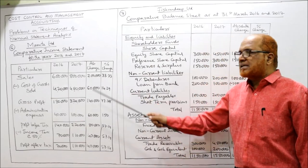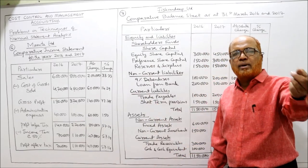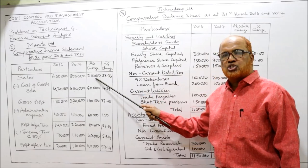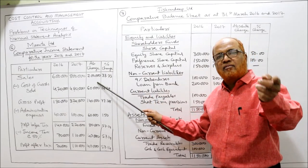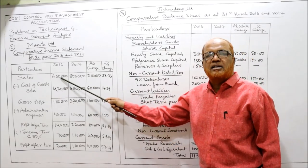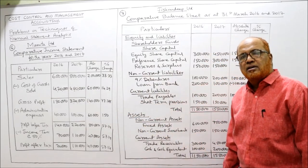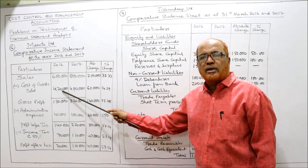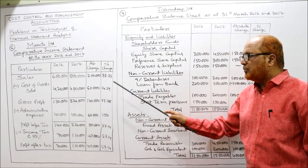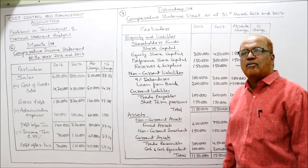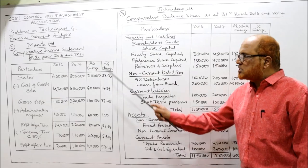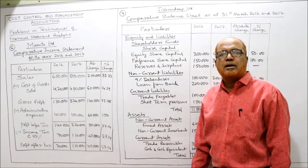Now easily we can find out absolute change and percentage change. Current year value minus last year value: 8 lakh minus 6 lakh gives 2 lakh absolute change. Percentage change: 2 lakh divided by last year's figure of 6 lakh into 100 gives 33.33%. Similarly, 4,80,000 minus 4,20,000 is 60,000. 60,000 divided by 4,20,000 into 100 gives 14.2%. As usual, we have calculated the absolute change and percentage change. This is the end of the 6th problem — income statement.